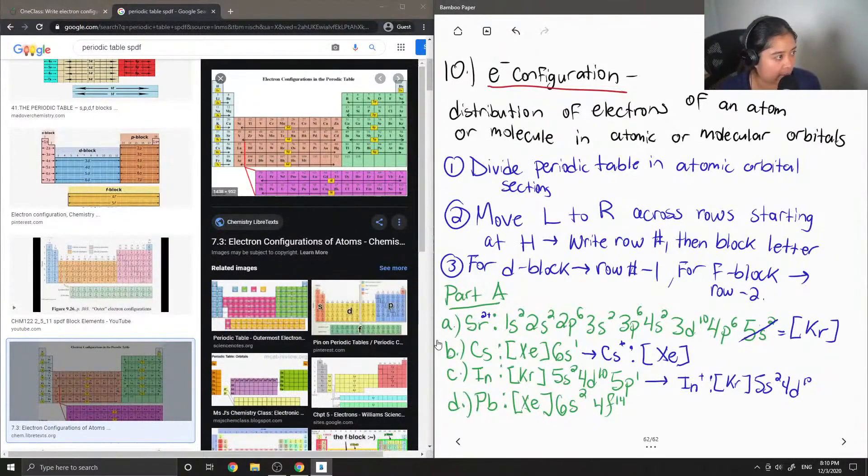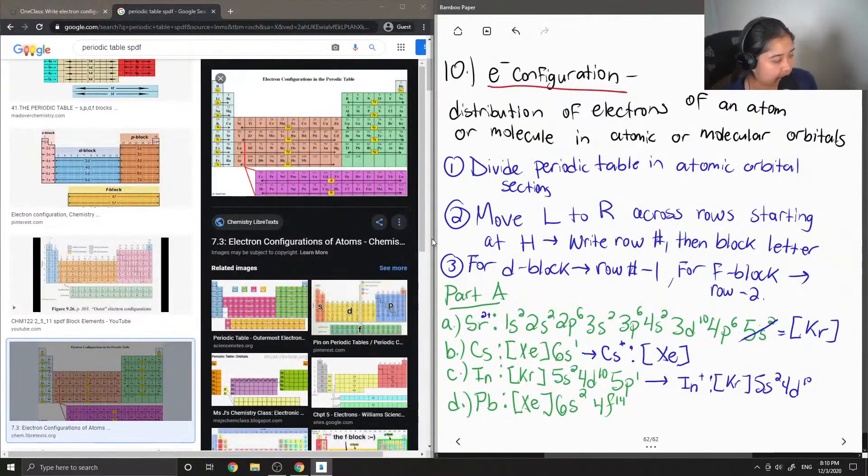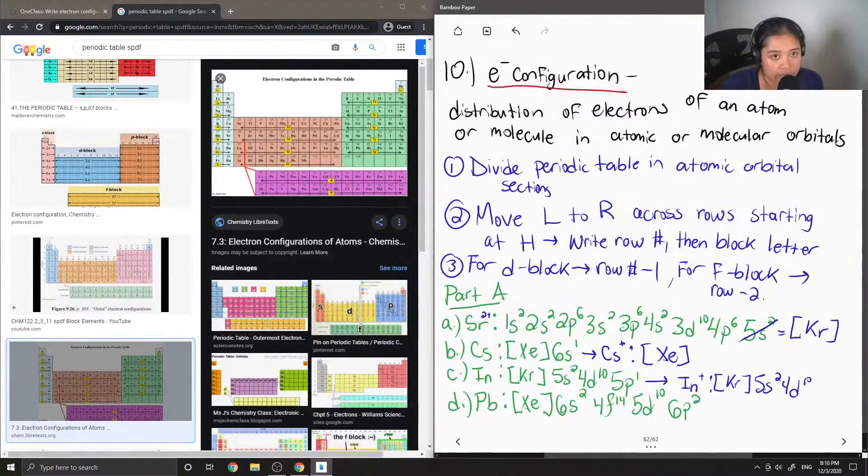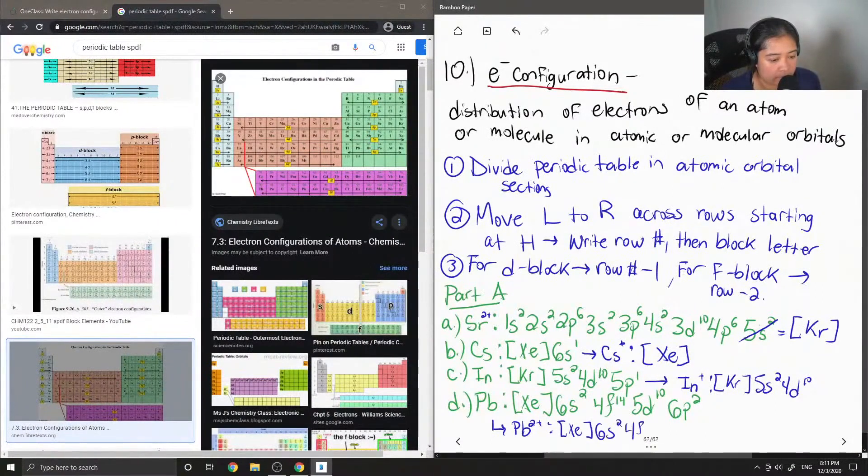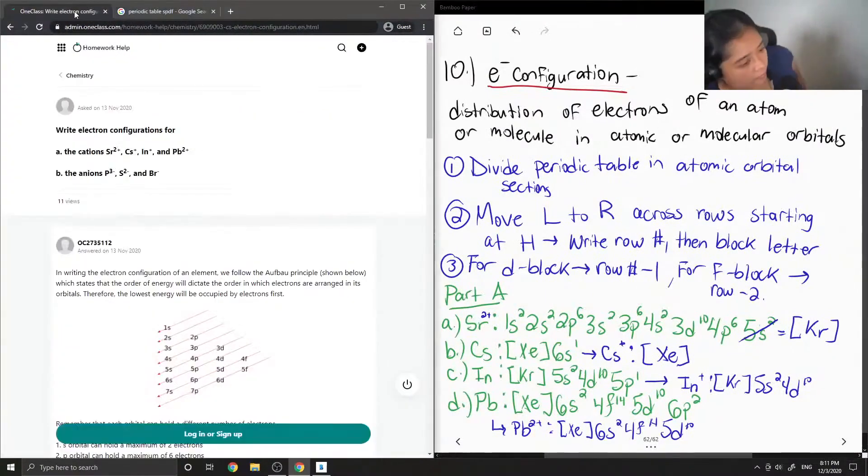So 4f14, 5d10. So 4f14, and then 6p2. Okay, so when we have lead 2 plus. We take away the last two electrons. And then we get the following.